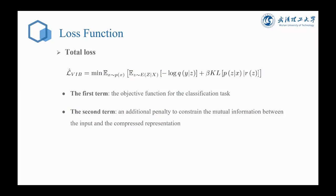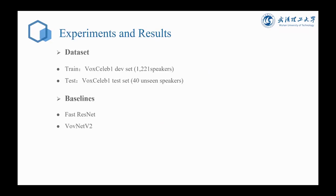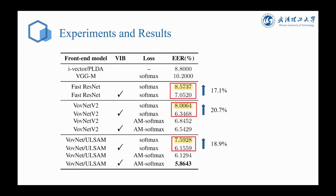The dataset we use is VoxCeleb1, and the baseline models are FastResNet and VOVNetV2. As we can see from the table, the models trained with the proposed VIB regularization strategy consistently outperform those trained without. From the results marked in yellow, our proposed feature extraction network also outperforms the baseline models.